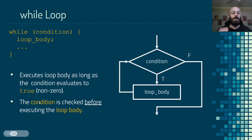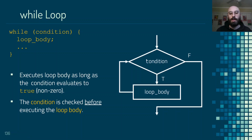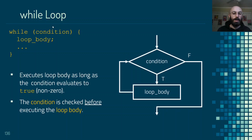The important thing to note is that the while loop checks the condition before executing the loop body. So if the condition is false the first time it checks, the loop body will never be performed. The condition is just a boolean expression that evaluates to true or false.